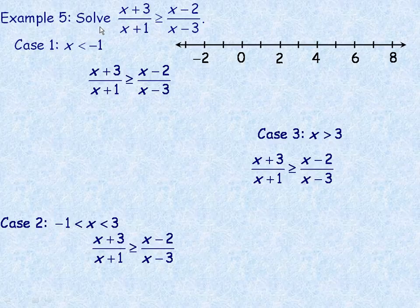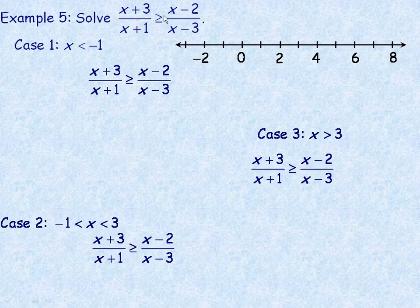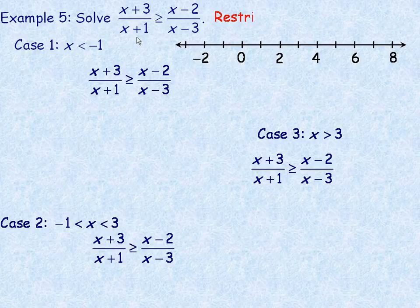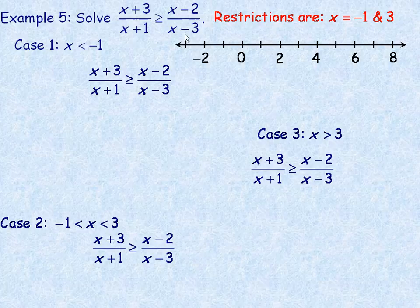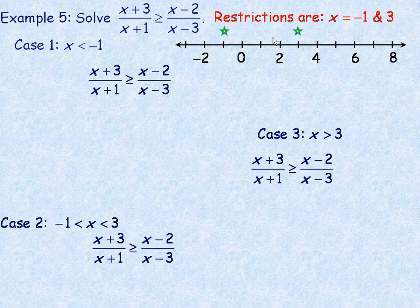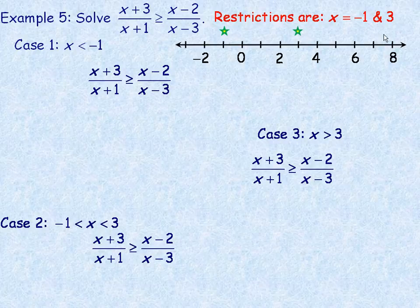Last example, number 5. We're asked to solve (x+3)/(x+1) ≥ (x-2)/(x-3). There are two restrictions here: negative 1 would make the first denominator 0, and positive 3 would make the second denominator 0. If we place those numbers on a number line — negative 1 and 3 — it divides the number line into three intervals: to the left of negative 1, between negative 1 and 3, and to the right of 3.